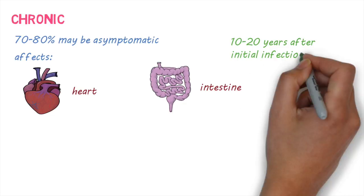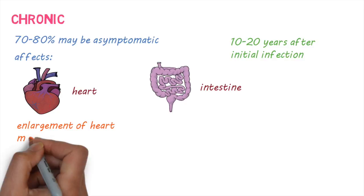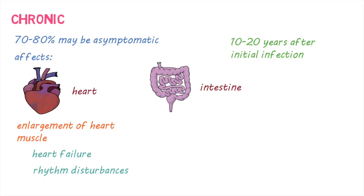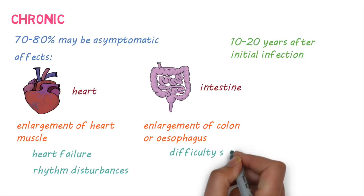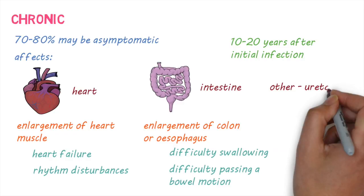In the heart, the disease can cause enlargement of the heart muscle, leading to heart failure or disturbances in the heart rhythm. In the intestine, there can be enlargement of the colon or the esophagus. This can lead to difficulties in swallowing food or passing a bowel motion. It can also affect other parts of the body, such as the ureters.